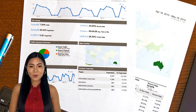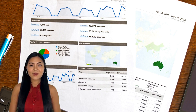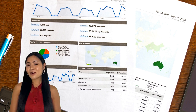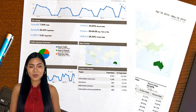Tip 4: Incorporate numbers whenever possible. Numbers are attention grabbers, and they provide concrete evidence of the value you offer. If your affiliate offer promises any kind of savings, whether it be time or money, make sure you include it in your headline. This not only shows the benefits, but it also builds trust with your audience and establishes legitimacy, which is critical in the world of affiliate marketing.